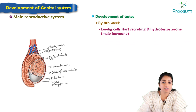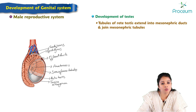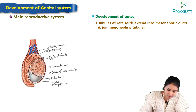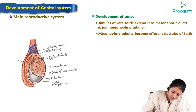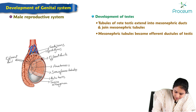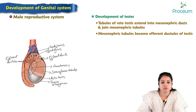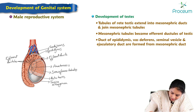The mesoderm around the seminiferous tubules forms the interstitial cells of Leydig. By the 8th week the Leydig cells start secreting dihydrotestosterone, which is the main hormone that stimulates sexual differentiation of the genital ducts from the mesonephric ducts and the external genitalia. The tubules of the rete testis extend into the mesonephric duct to form efferent ductules. These efferent ductules then form the duct of the epididymis, which is the highly coiled duct visible here.